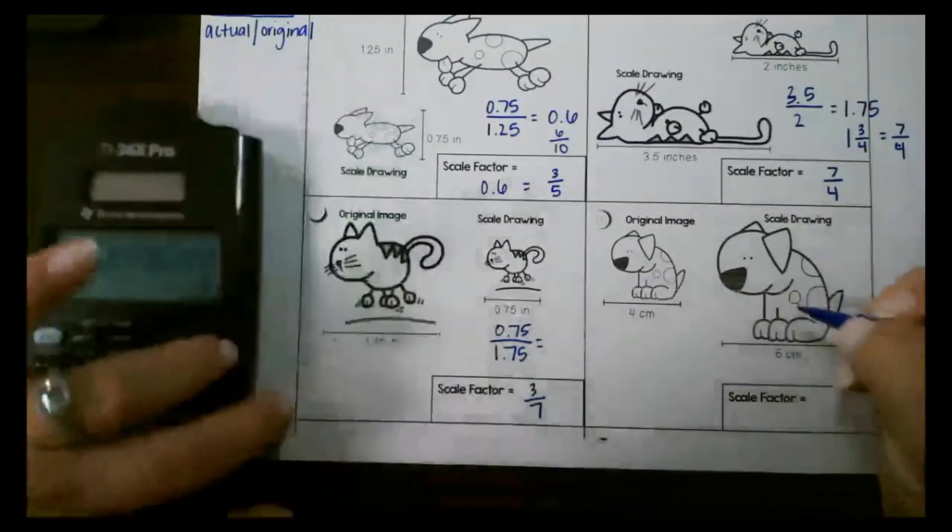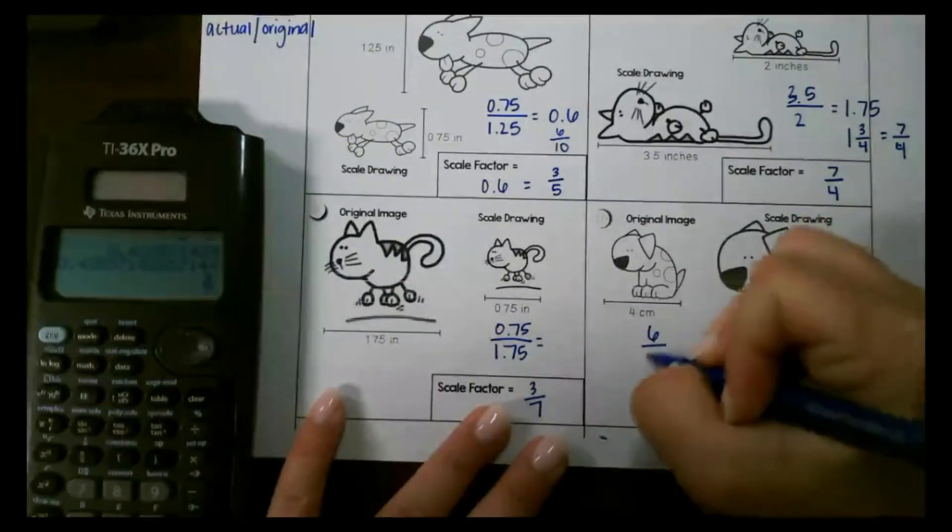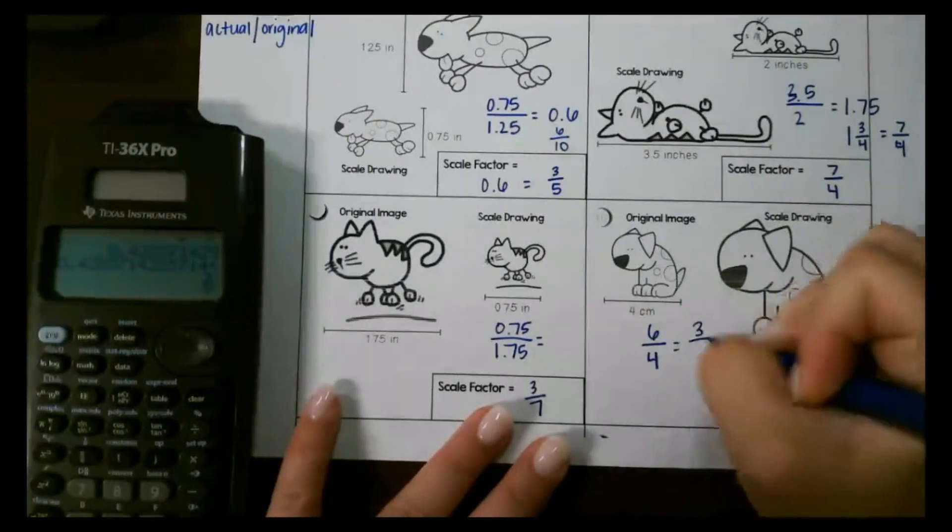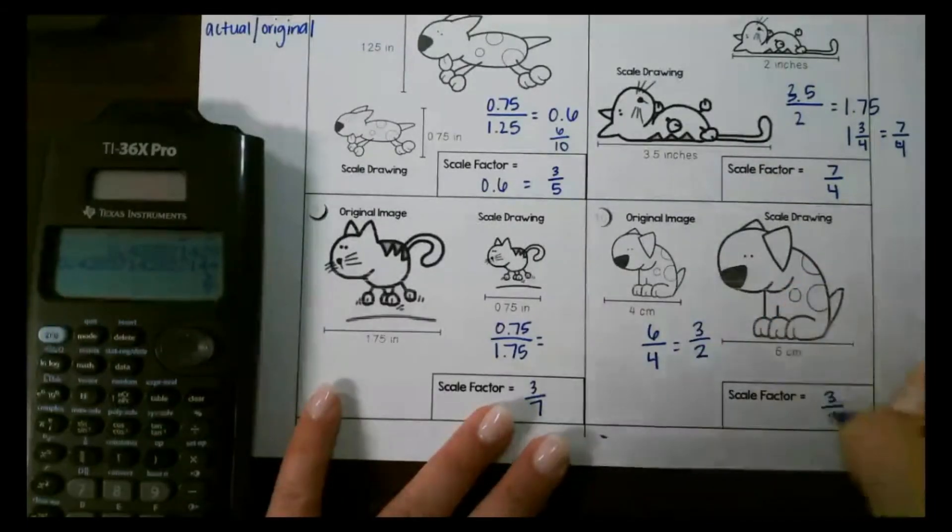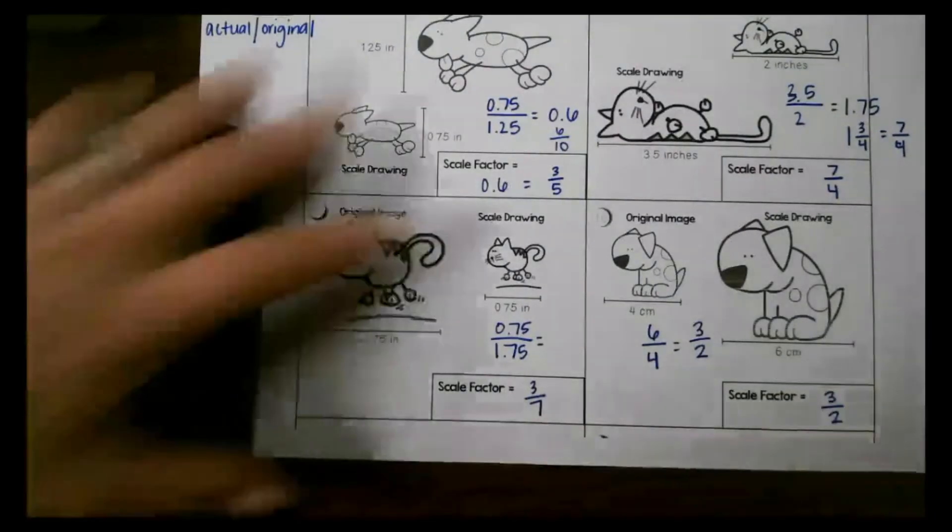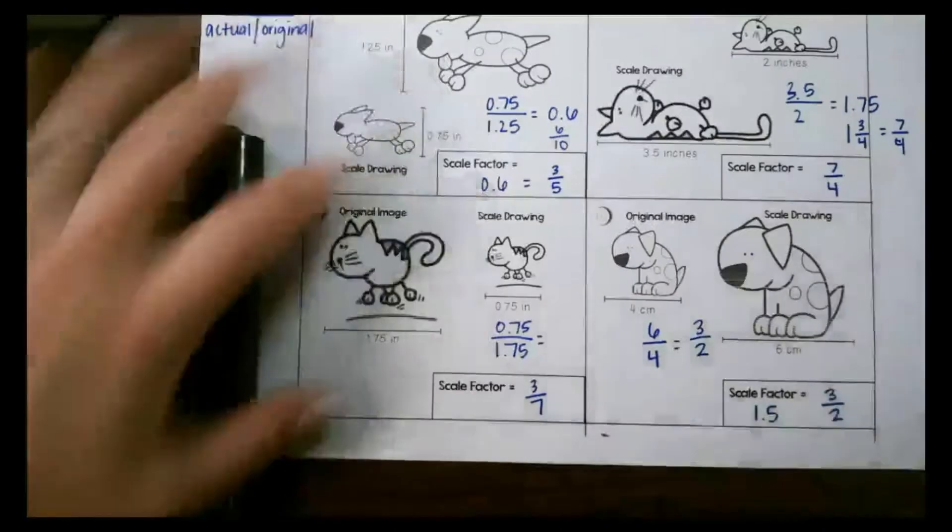And then the last one our scale is 6 and our original is 4. This one's easy to simplify so I could do 3 over 2 or if it wants it as a decimal you could divide to have it just like that.